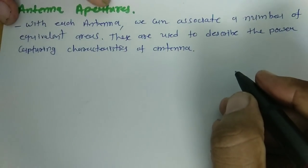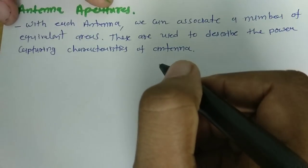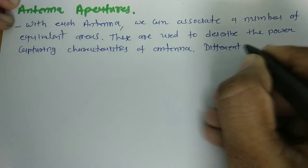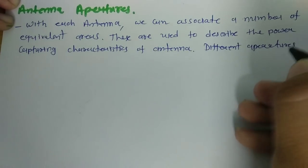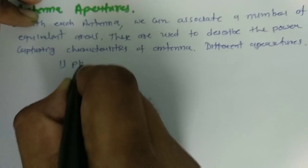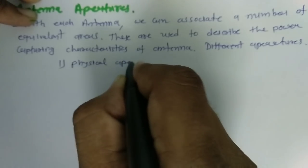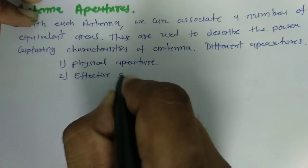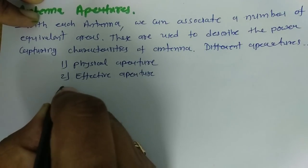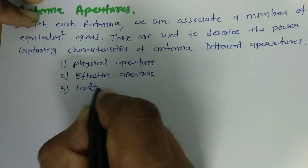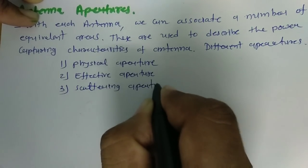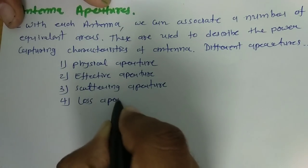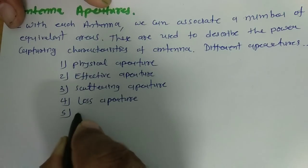There are various types of apertures. Apertures means the area that is associated with an antenna. The different apertures are: physical aperture, effective aperture, scattering aperture, loss aperture, and collecting aperture.